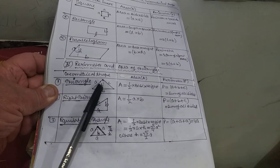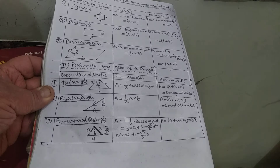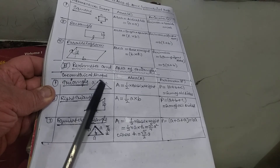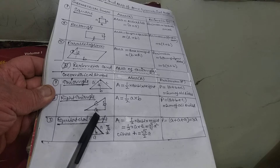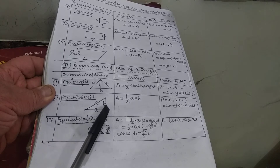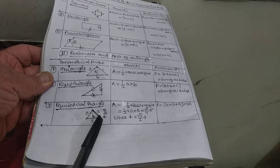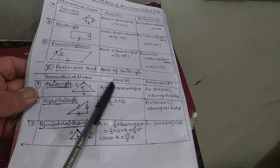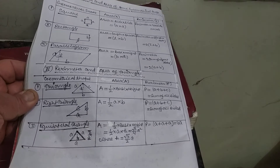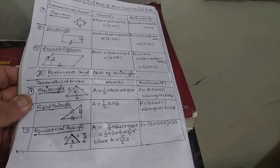For triangles, there are three geometrical shapes: triangle, right triangle, and equilateral triangle. For a general triangle with sides A, B, C and height H, area equals half × base × height, and perimeter equals A + B + C, which is the sum of all sides. In a right triangle, the sides are base, perpendicular, and hypotenuse, with a 90-degree angle.